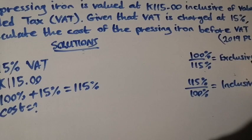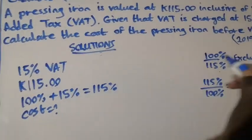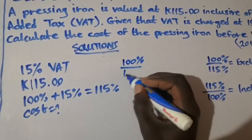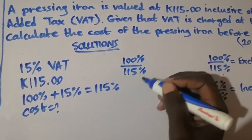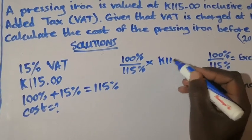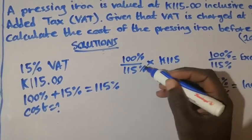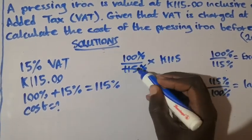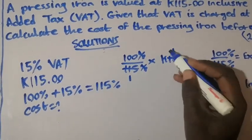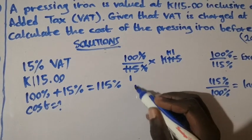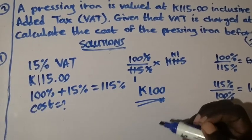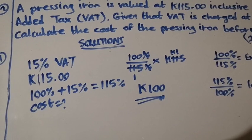Since we want the cost before VAT, it's exclusive. So we use 100 over 115, times the total amount, which is 115. The percent cancels — 115 into 115 is 1. So we have 100 times 1, which gives us 100. This is the amount of the pressing iron before VAT.